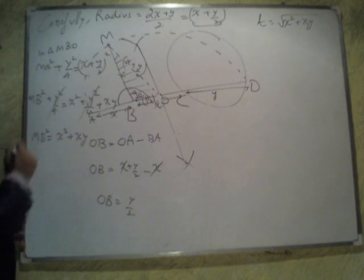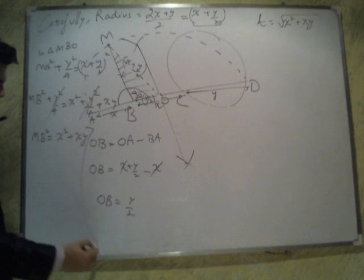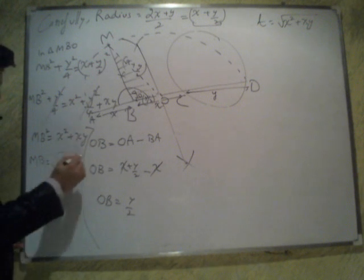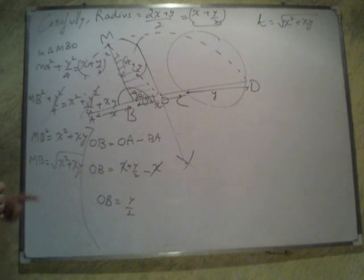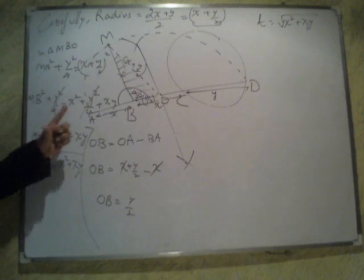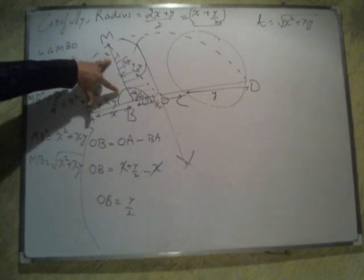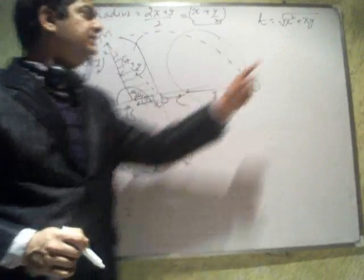Which takes me to MB is equal to under root of X square plus XY. That means intentionally or unintentionally, I am getting the length of the MB as same as length of the tangent.